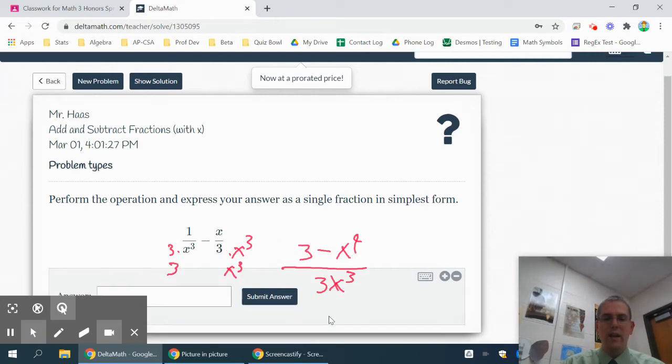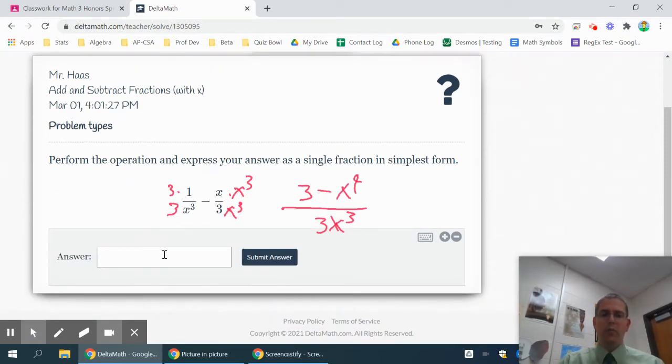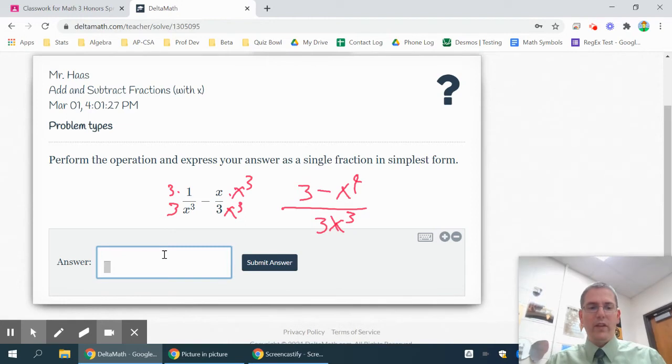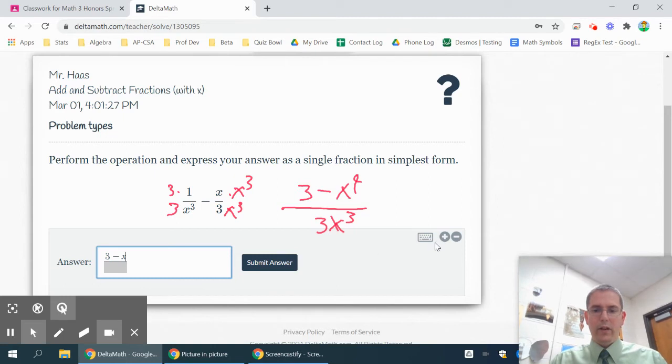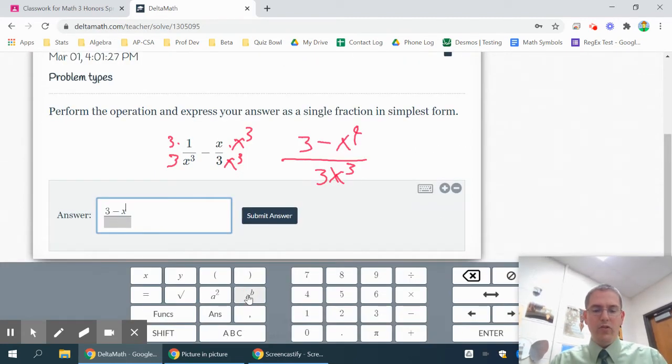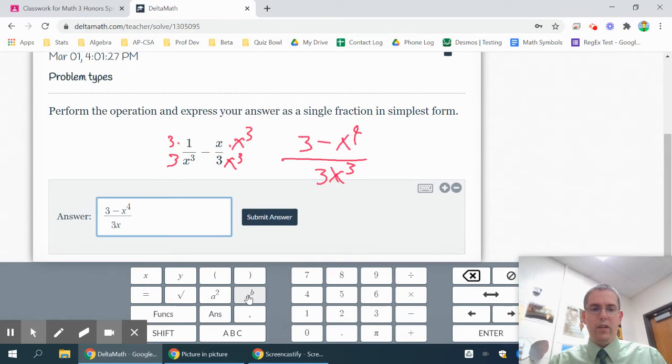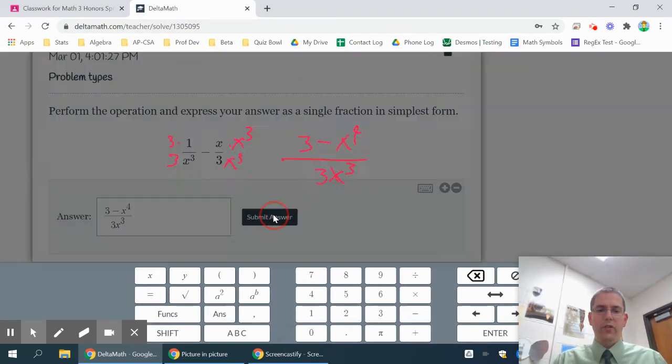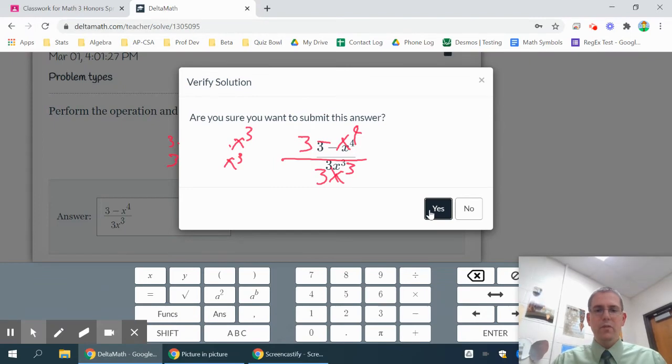Now to type in this answer, I'm going to need to probably type your fraction bar first. That's your divide symbol. And then just three minus x to the fourth. I can use my little calculator symbol and use a to the b, or if you're using a keyboard, shift six will also give you an exponent. And that's three x to the third. Submit your answer. It should be right.